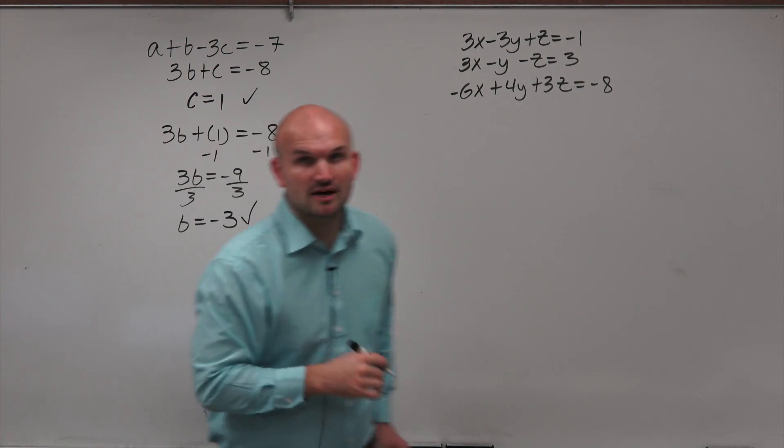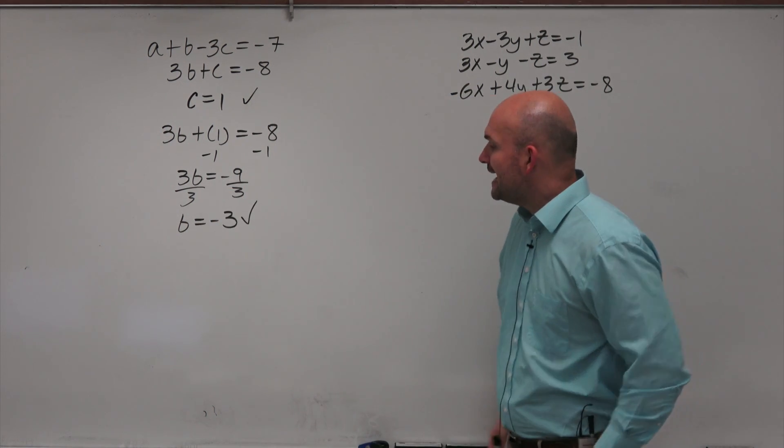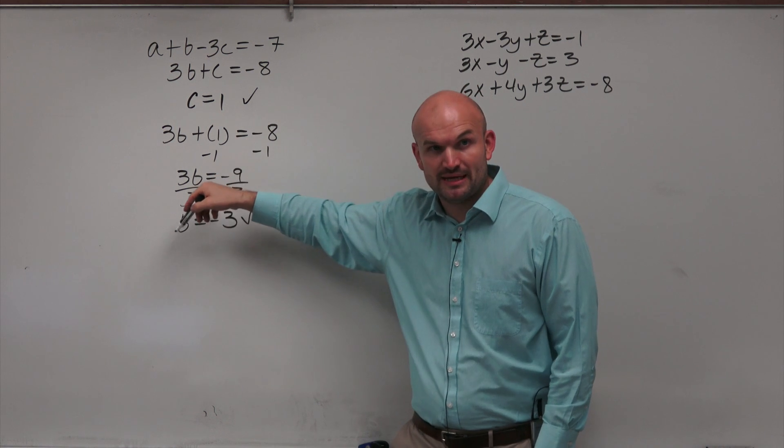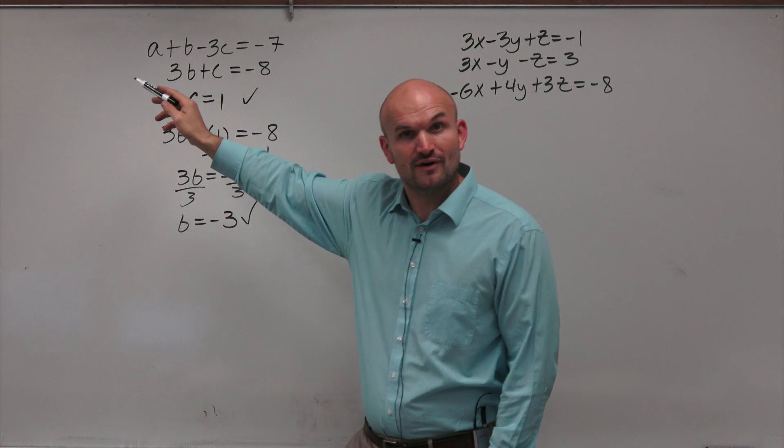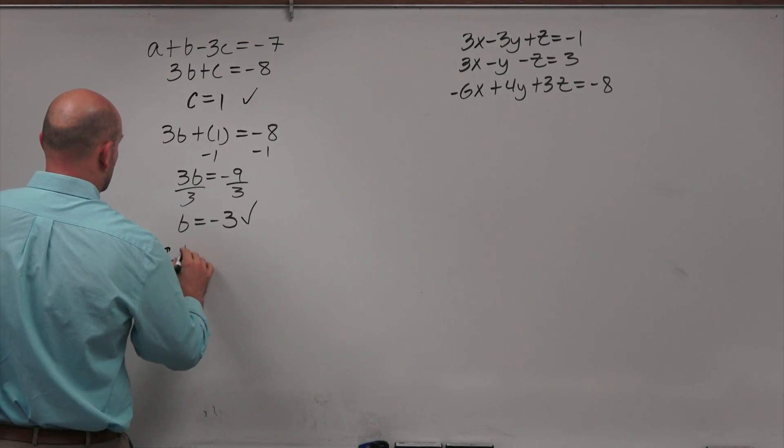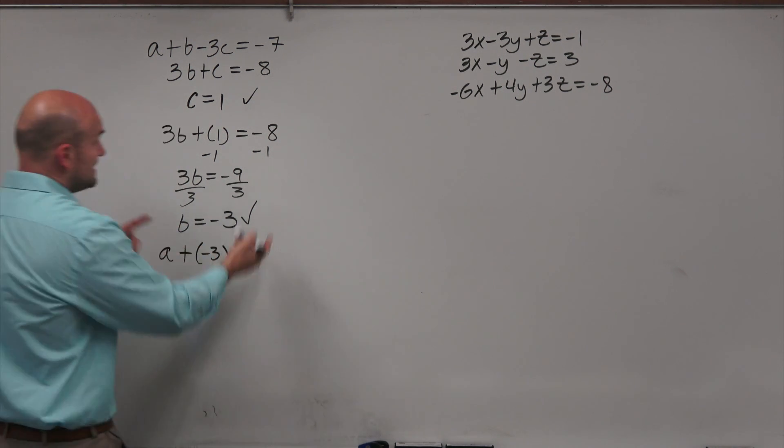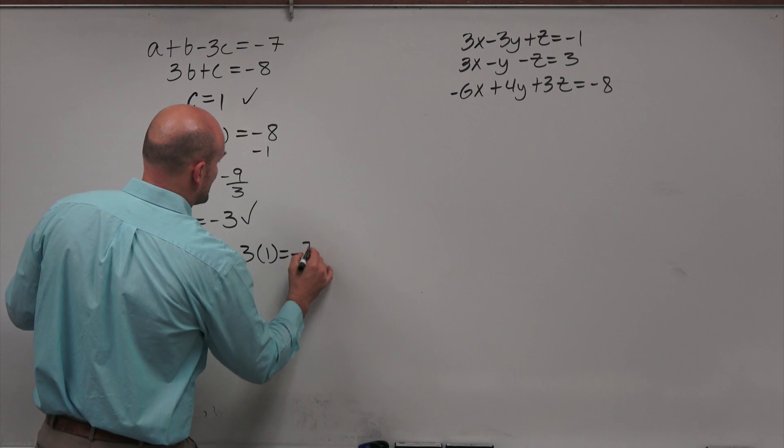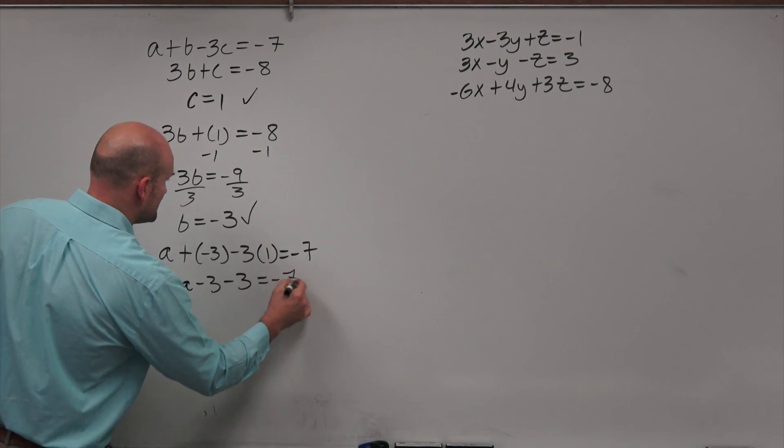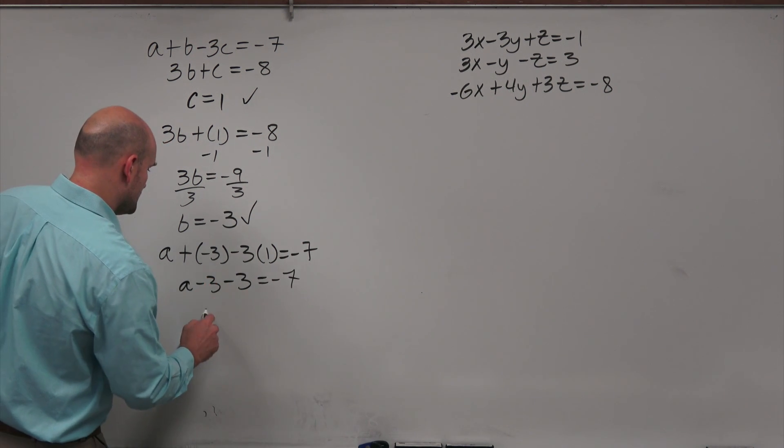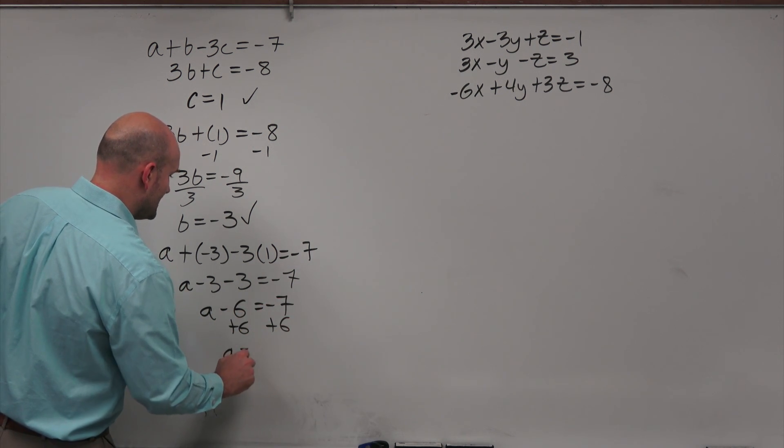So now, I've figured out the value of b. So we're doing one variable at a time. And now, we know the value of c. We know the value of b. We can just substitute them into our top equation and then solve for a. So what I have here is a plus b, which now we know is equal to negative 3 minus 3 times c, which we now know is 1, equals negative 7. So I can simplify this here. a minus 3 minus 3 is equal to negative 7. You owe me $3. You borrow three more. You now owe me $6 equals negative 7. And then you add 6. And therefore, a is equal to 1.